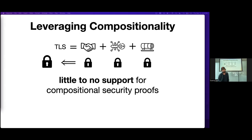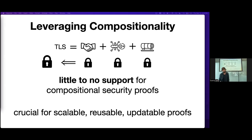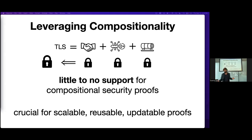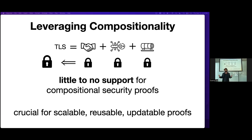Unfortunately, the protocol verifier tools I described before have little or no support for doing these compositional proofs, which means you basically have to shove the entire protocol into one file and verify it all at once. Compositionality — breaking a protocol into well-defined chunks — is crucial not only for scalability but also for reusing proofs across different protocols. For example, if you've modified TLS for post-quantum resistance or need to update the proof, you want to be able to do compositional proofs.